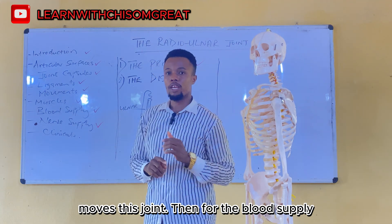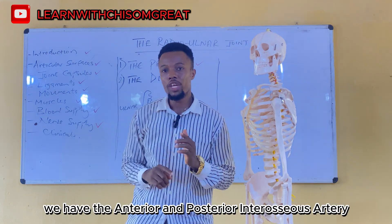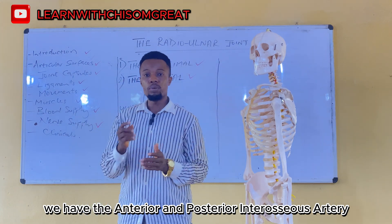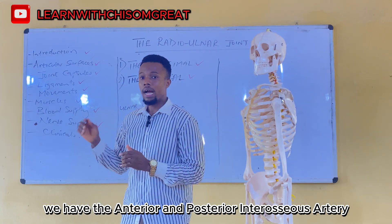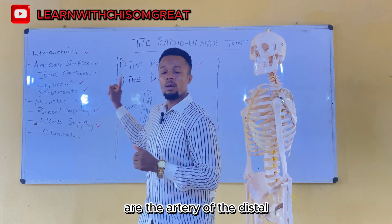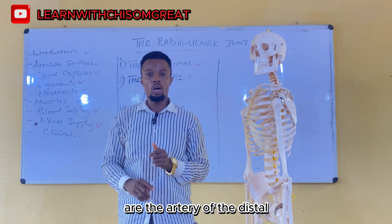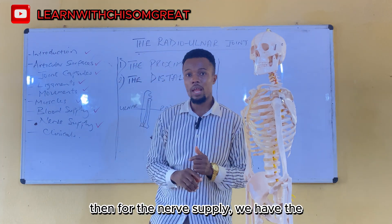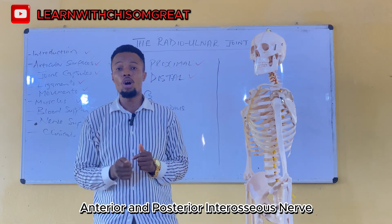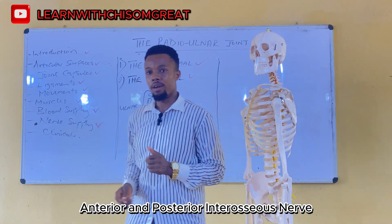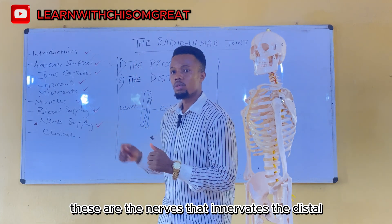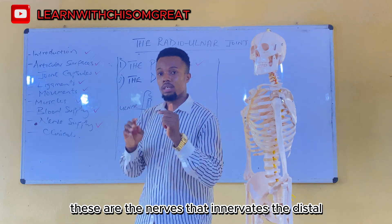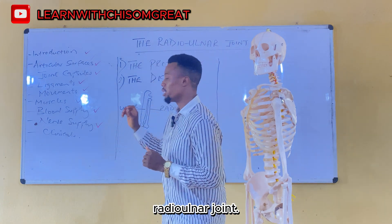For blood supply to the distal radioulnar joint, we have the anterior and posterior interosseous arteries. For nerve supply, we have the anterior and posterior interosseous nerves.